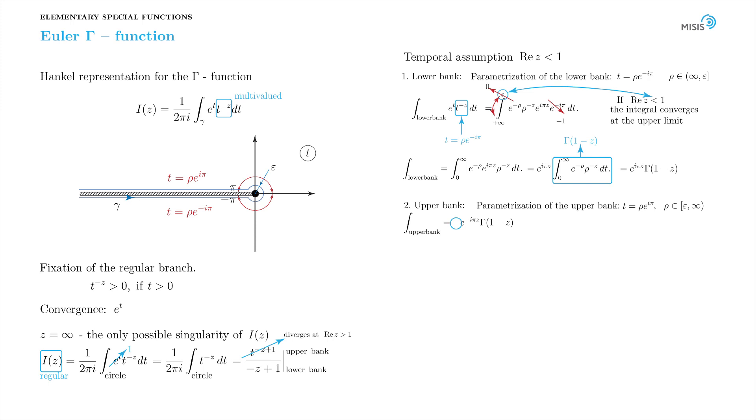Finally, there is the integral along the small circle of infinitesimal radius epsilon. Let's analyze it. To compute it, we introduce the obvious parameterization. t equals epsilon times e to i phi, where phi changes from minus pi to pi.